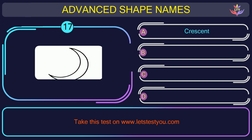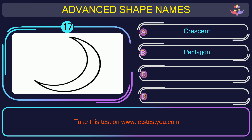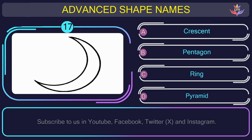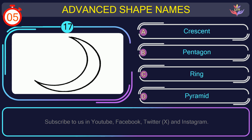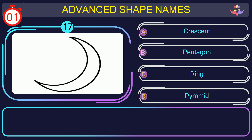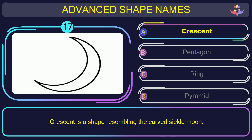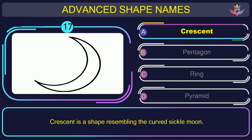Question number seventeen. Could you recognize the name of the shape in this picture? The correct answer is option A. Crescent. Crescent is a shape resembling the curved sickle moon.